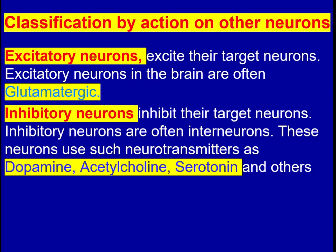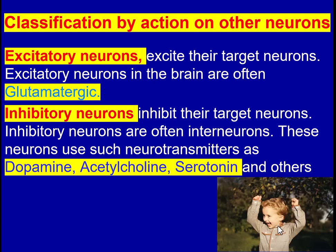Classifying neurons by their action on other neurons: excitatory neurons excite their target neurons. Excitatory neurons in the brain are often glutamatergic — they release glutamate — and they cause excitation. So the excitatory neurons in the nervous system are glutamatergic.